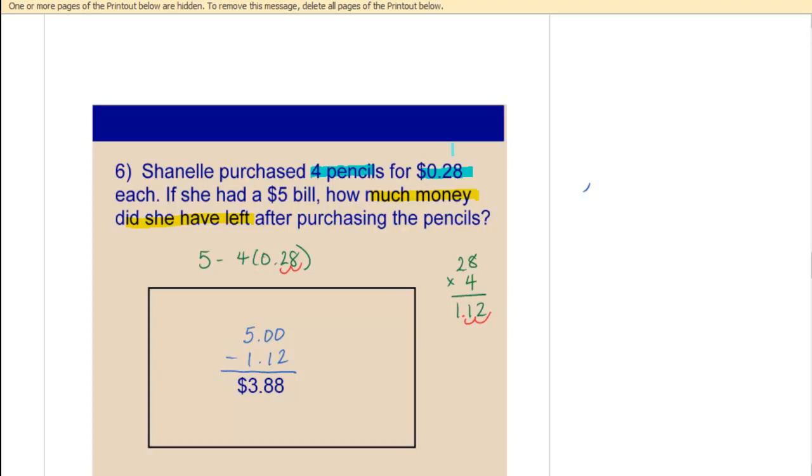So whenever you have a group that has the same amount for each group, what do you do? You multiply, right? So four times .28 gives you the total amount that was spent on pencils, which ends up being $1.12. And then we have a $5 bill, so we're going to subtract and we end up with $3.88 as our change.